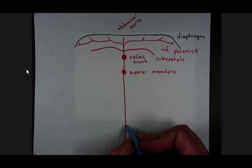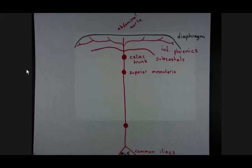Another unpaired branch. Let's put down here the inferior mesenteric.